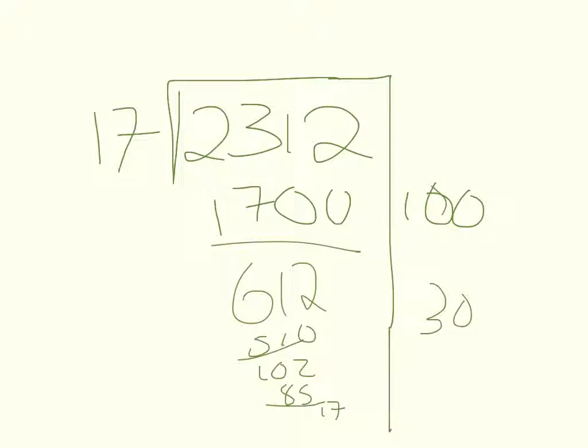That leaves me with 17, and I know 17 goes into 17 once. So as I have my partial quotients, I want to make them into a full quotient. So that would be 136, because I added my partial quotients.